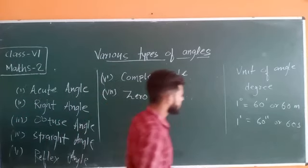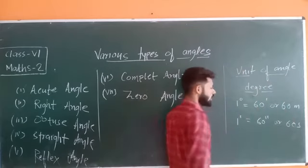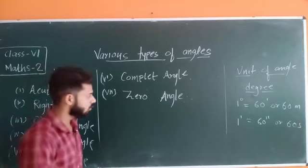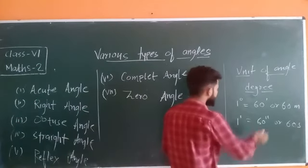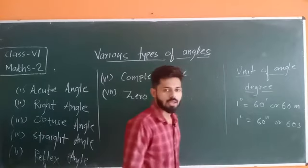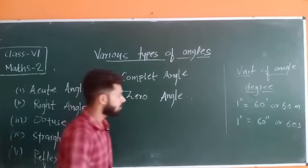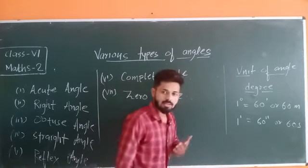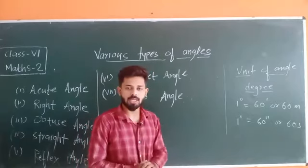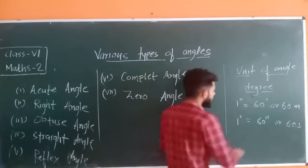Let us start from the first topic: the unit of angle. Everything which is measured has some standard unit, and the degree is the SI unit of angle. Whenever you measure an angle, it will be shown in degrees — just like distance is measured in meters, similarly degree is the unit of angle.